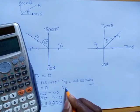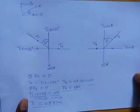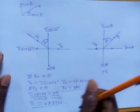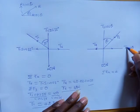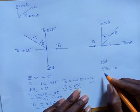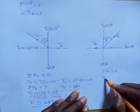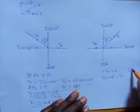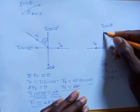We get T2 equal to 28 newtons. Moving to the second diagram, the summation of forces in the x-axis also has to be equal to zero. We have two forces in the x-axis, so the one moving to the right is equated to T2, giving us T3 sine theta equals T2. We also say the summation of forces in the y equals zero.